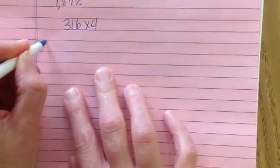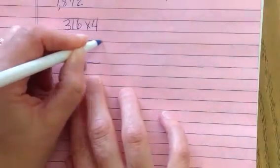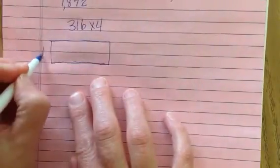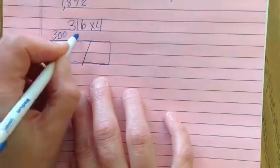We are going to try 316 times 4. I'm going to start with the area model. 4 goes here, we need to partition. 300, 10, 6.